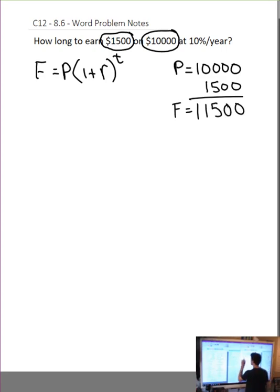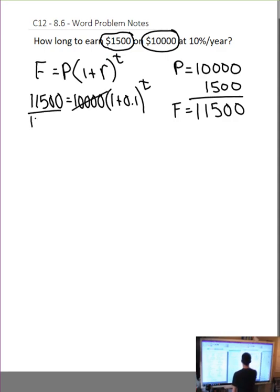So that's my future value. $11,500 is equal to my present value, $10,000, times 1 plus my interest rate is 0.1 to the exponent time. So I can start by dividing both sides by 10,000.